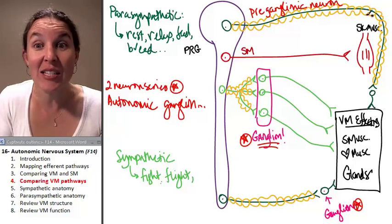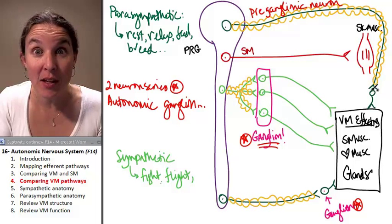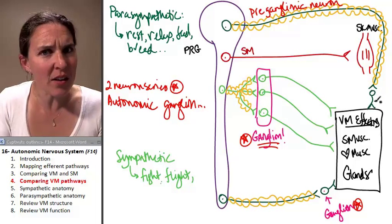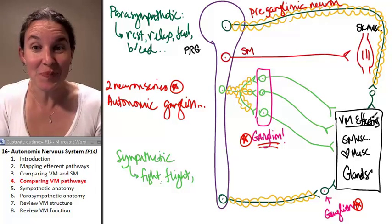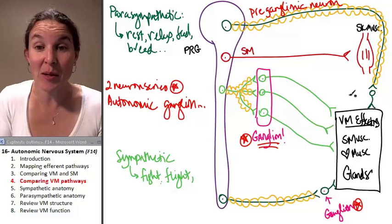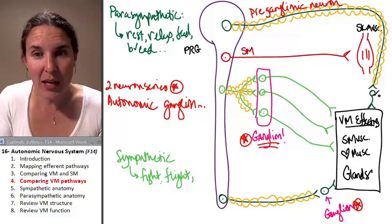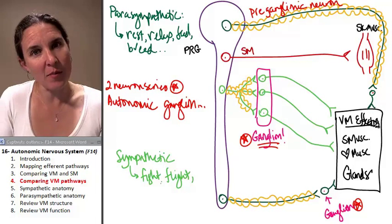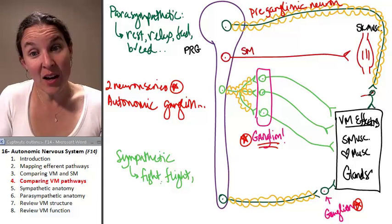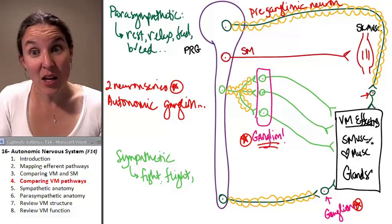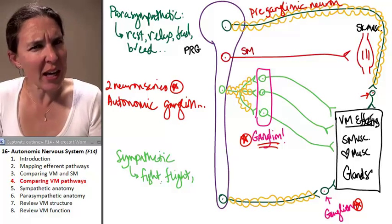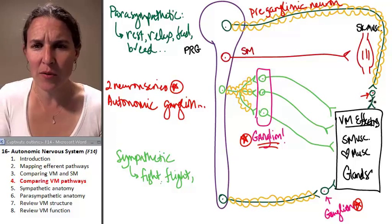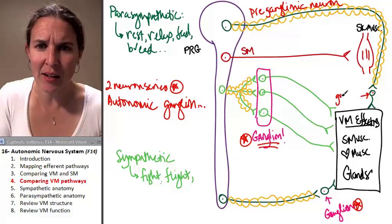The preganglionic neuron is going to synapse with what are you going to call the next neuron? If this one was preganglionic, the next neuron is going to be my ganglionic neuron because where did the ganglion come from? The ganglion is a group of cell bodies. So the ganglionic neuron is responsible for the ganglion. Does that work for you? This is my ganglionic neuron.